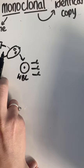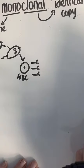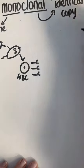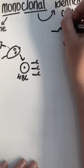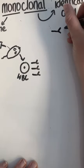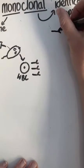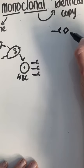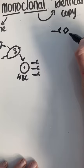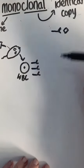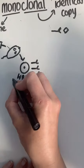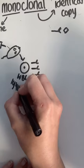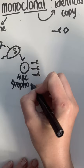What's special about these antibodies is that they are specific to the antigen injected into the mouse — they have a complementary shape. So if the antigen is this shape, the antibody would be complementary to it. The lymphocyte, the white blood cell, is producing these antibodies.